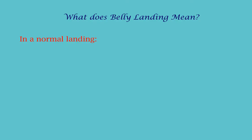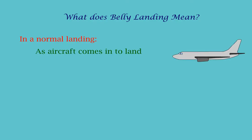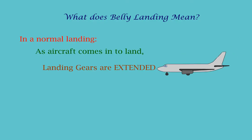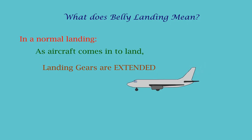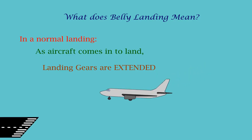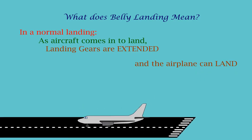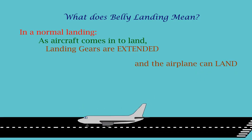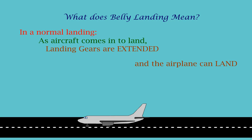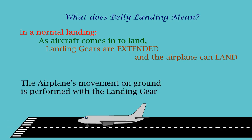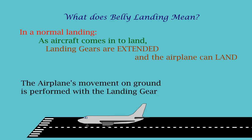In a normal landing, as the aircraft comes in to land, the landing gears are extended while descending, and the airplane can land safely on the runway. The airplane's movement on the ground is done with the landing gear.